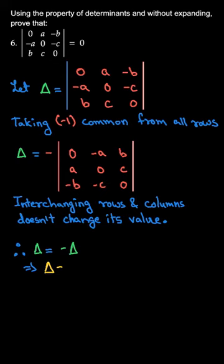So delta equals minus delta, hence two delta will be zero, and two delta equals zero gives us delta equals zero. So the value of left hand side is zero, therefore LHS equals RHS. Thank you.